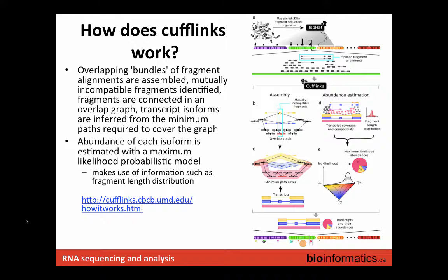Once you have these isoform definitions — which could be totally novel and just made up by Cufflinks, or guided by what we know about the transcriptome — it goes back and tries to assign reads or portions of reads to each isoform to get some concept of the likely abundance of each of these different isoforms in the sample.